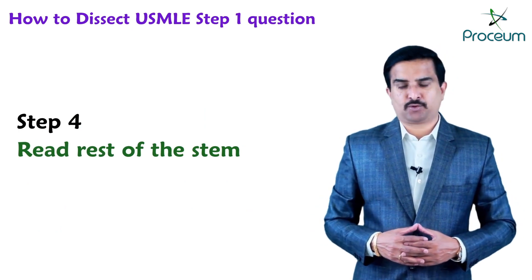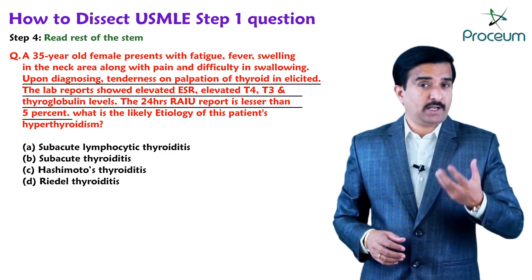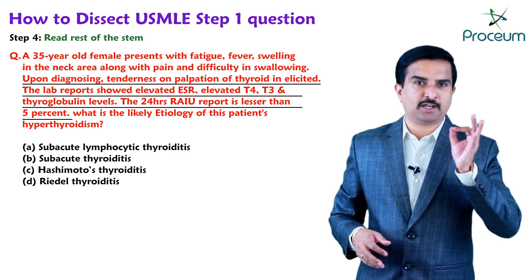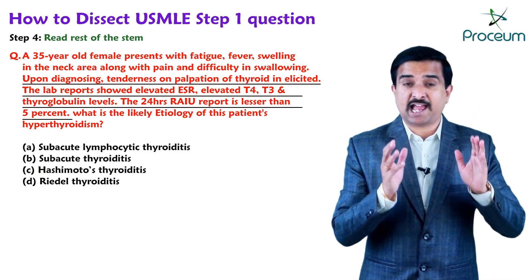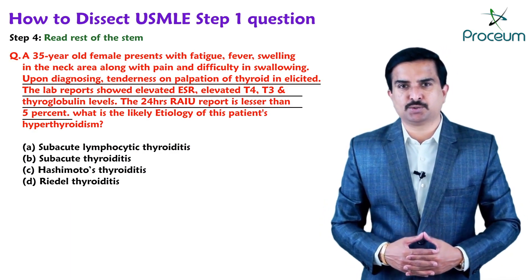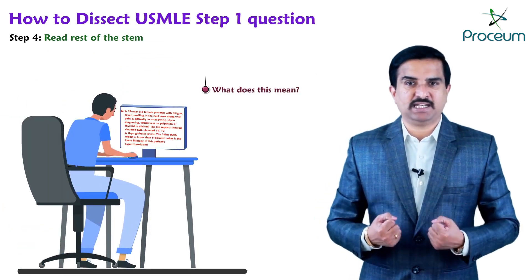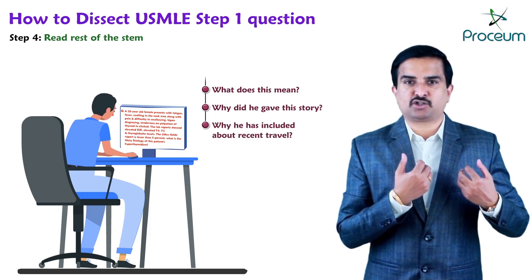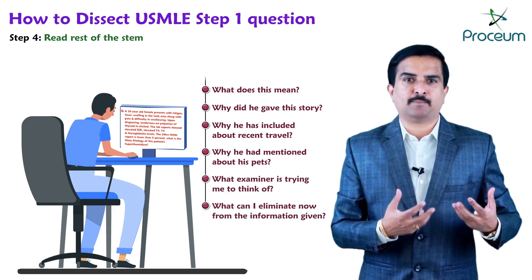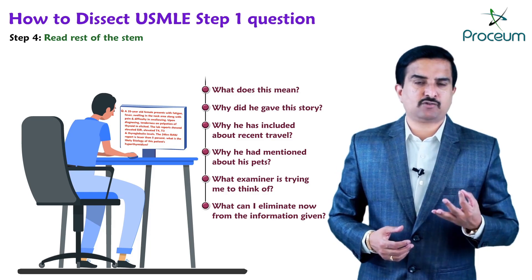Step four is to read the rest of the stem. Read the whole story and ask yourself why each piece of information is included. If you think something is fluff, note that — there is definitely excess information in every question designed to distract you. This is especially true for question banks and the real USMLE Step 1 exam. Constantly ask yourself: Why did they include recent travel? Why are pets mentioned? What is the examiner trying to make me think? What can I eliminate? Thinking critically through these details will drastically increase your probability of answering correctly.